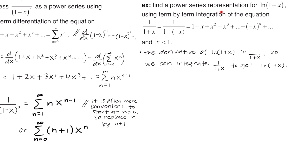This example says: find a power series representation for the natural log of 1 plus x using term by term integration. We're given 1 over 1 plus x, which can be rewritten as 1 over 1 minus negative x. In expanded form it goes 1 minus x plus x squared minus x cubed, and the general term is negative x to the n. Because this is a geometric series, it converges when the absolute value of x is less than 1. The derivative of ln(1 plus x) is 1 over 1 plus x, so if we have the expression for 1 over 1 plus x and need to get back to ln(1 plus x), we can integrate.